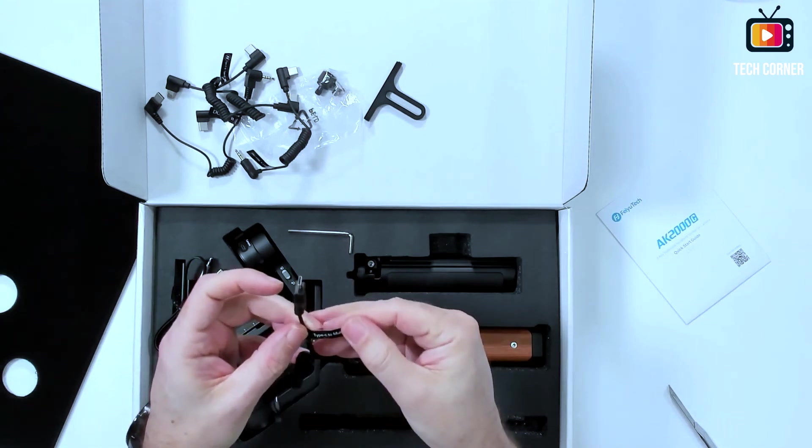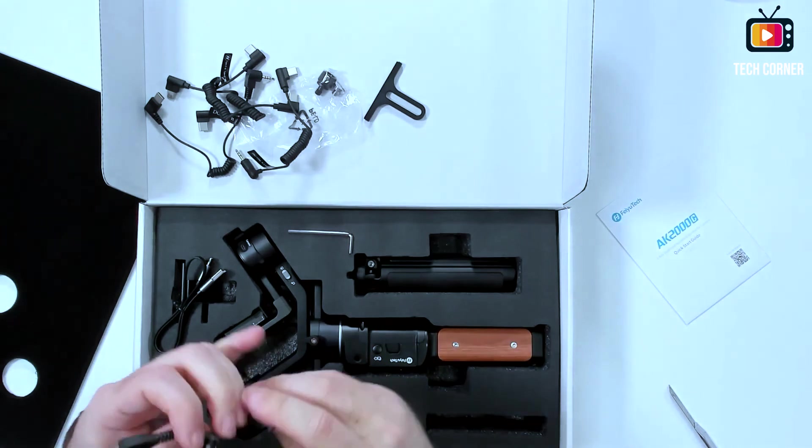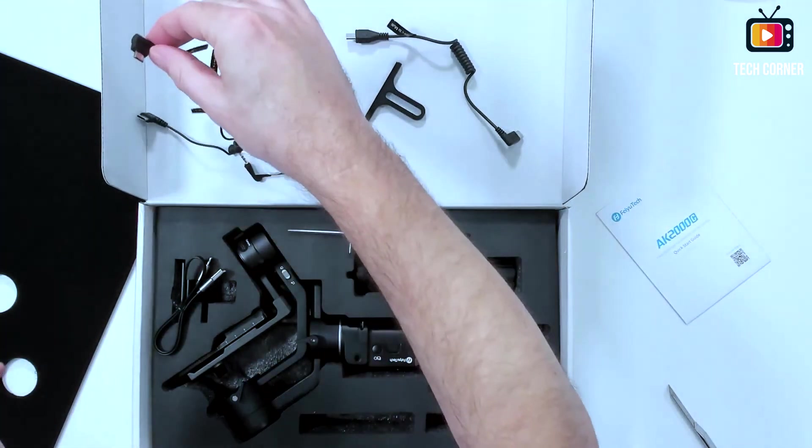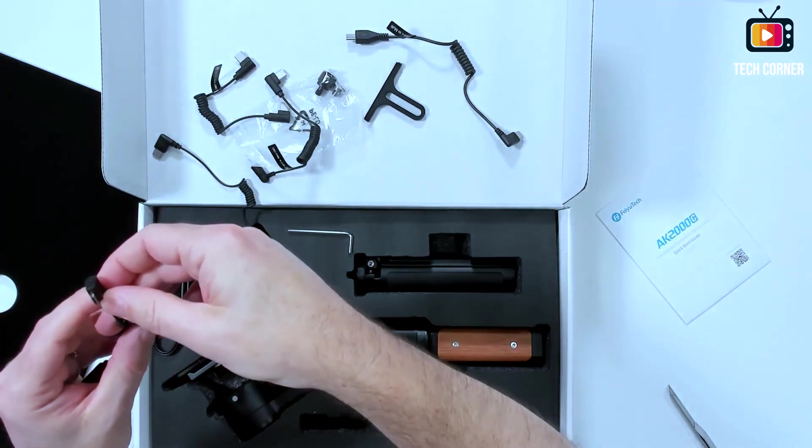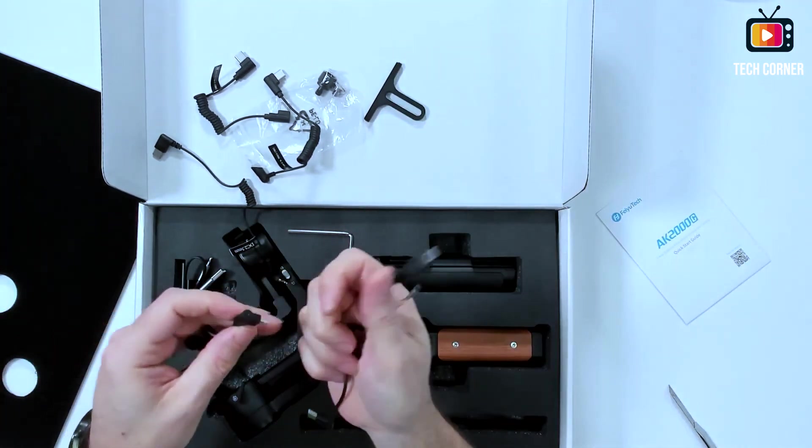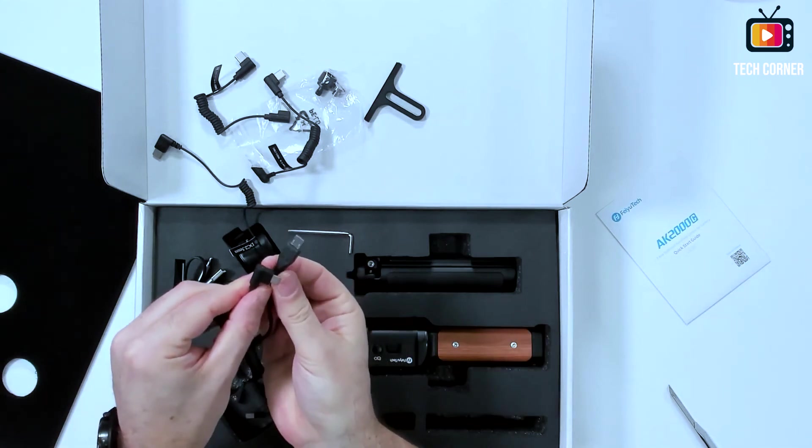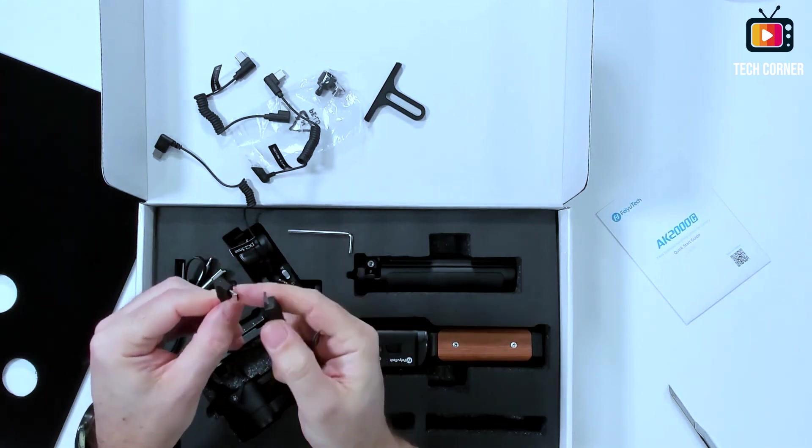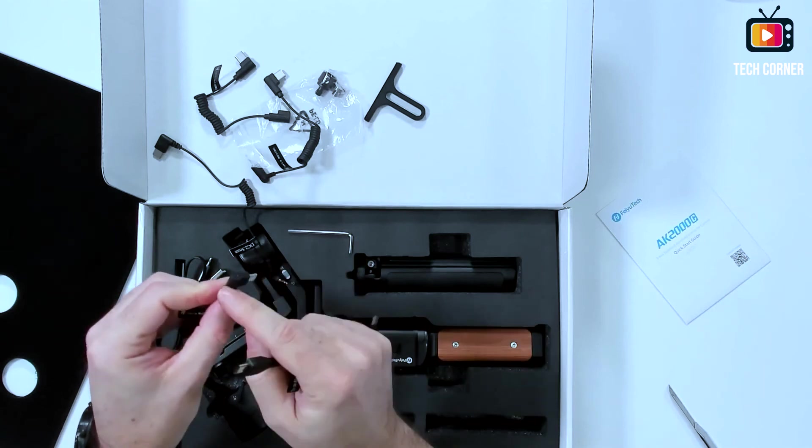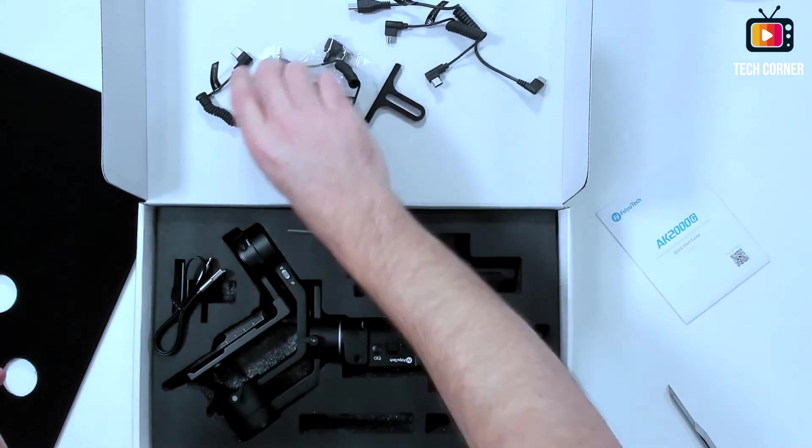We have a Type-C connector to Type-C also. We have 2.5 millimeters, I believe, TRS 2.5 millimeters to USB Type-C connector. And we have also a USB to micro USB. We call it Type-C to multi. No, this is Type-C to micro USB. And they seem equal. I don't know what's the difference. Ah, it's the, this is in L and this is straightforward. So that's the difference.